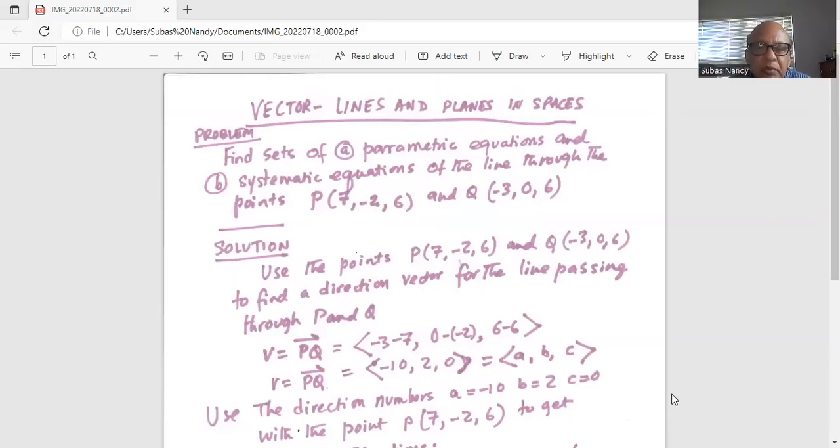So use the points P and Q to find the direction vector for the line passing through P and Q. So first we find a vector PQ,